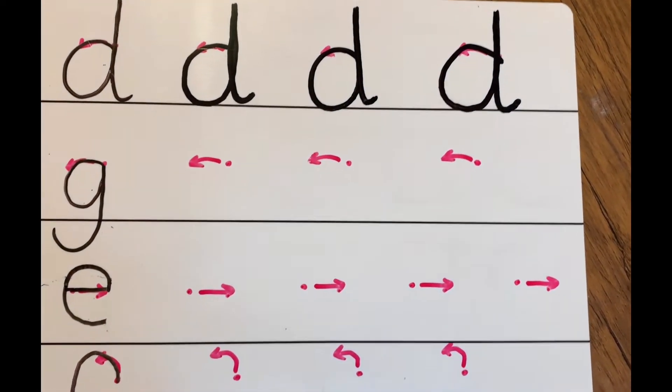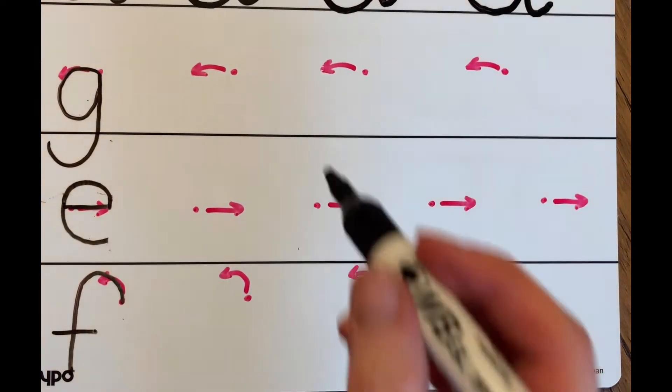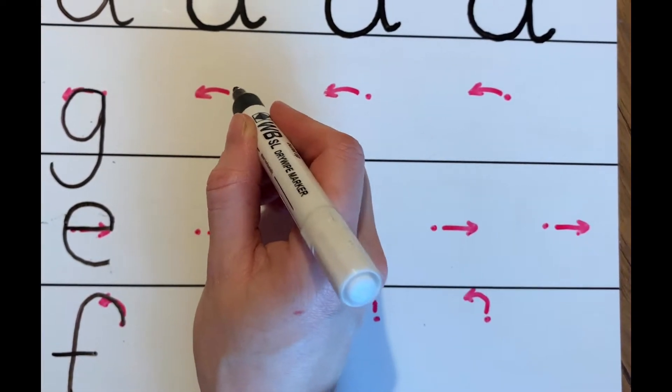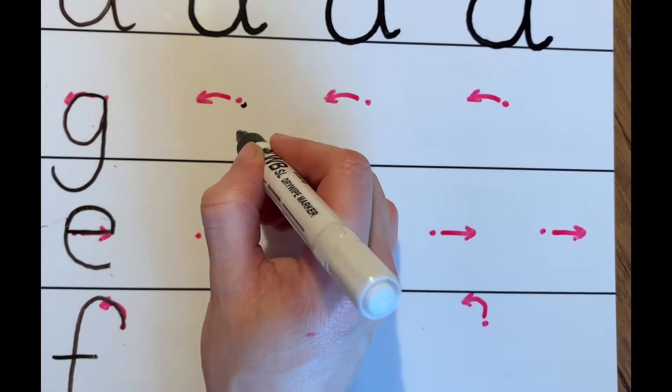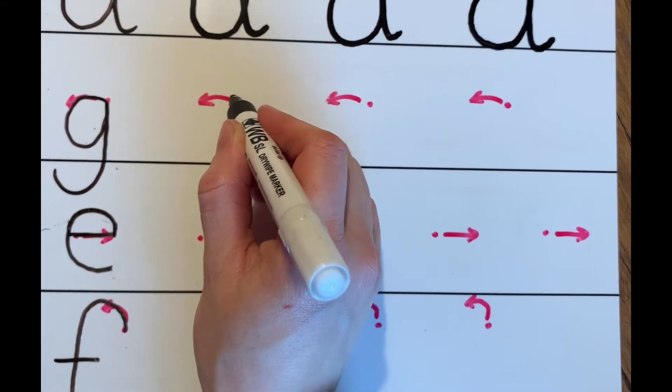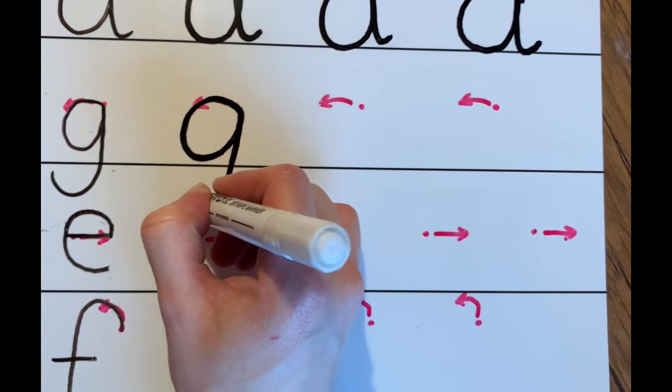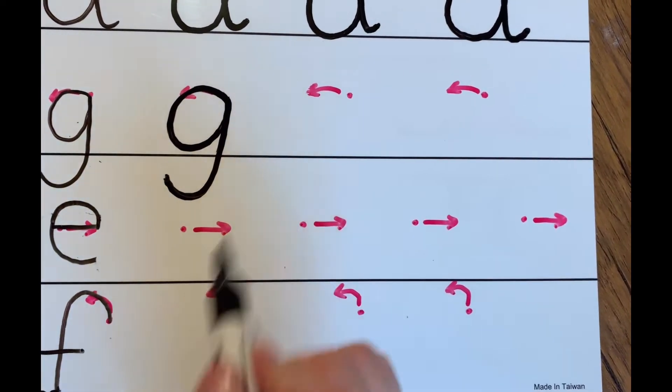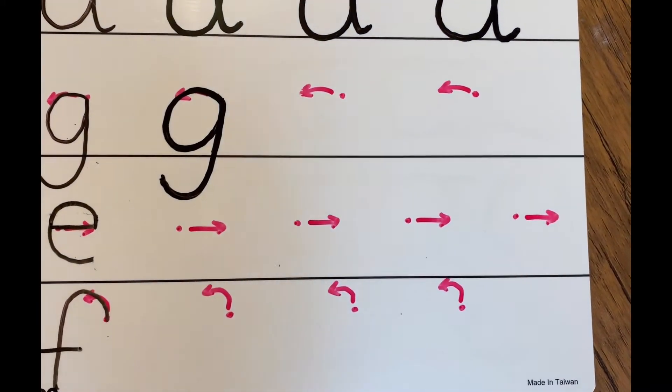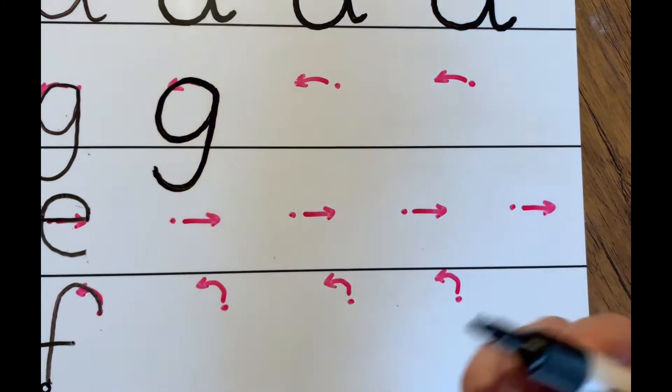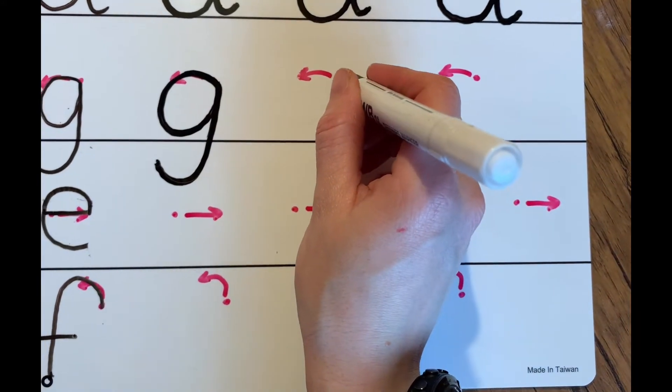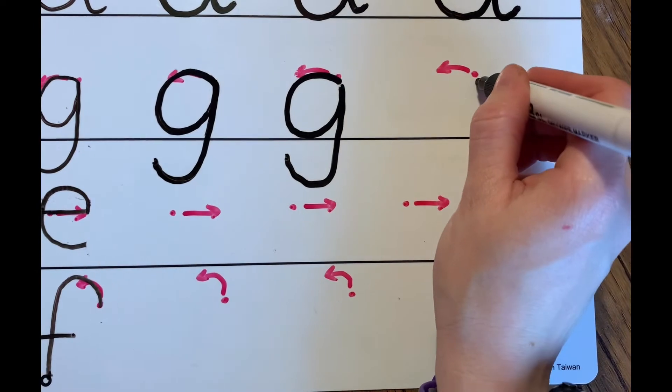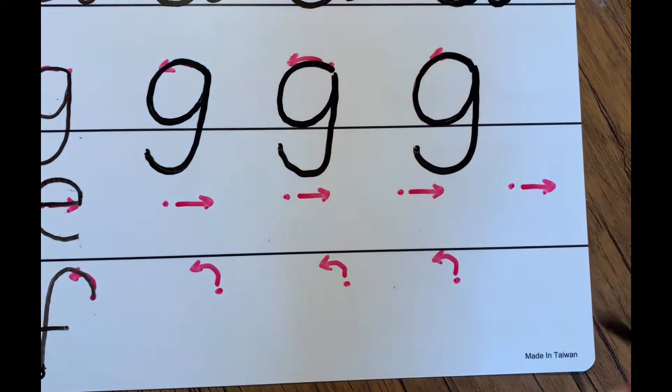Then we go to the g. For the g, we start on the red dot, follow the red arrow in the anti-clockwise direction around the girl and give her a curl. Make sure her curl comes below the line because the g is a descender. It descends below the line, it comes underneath the line. Around the girl and give her a curl. Around the girl and give her a curl.